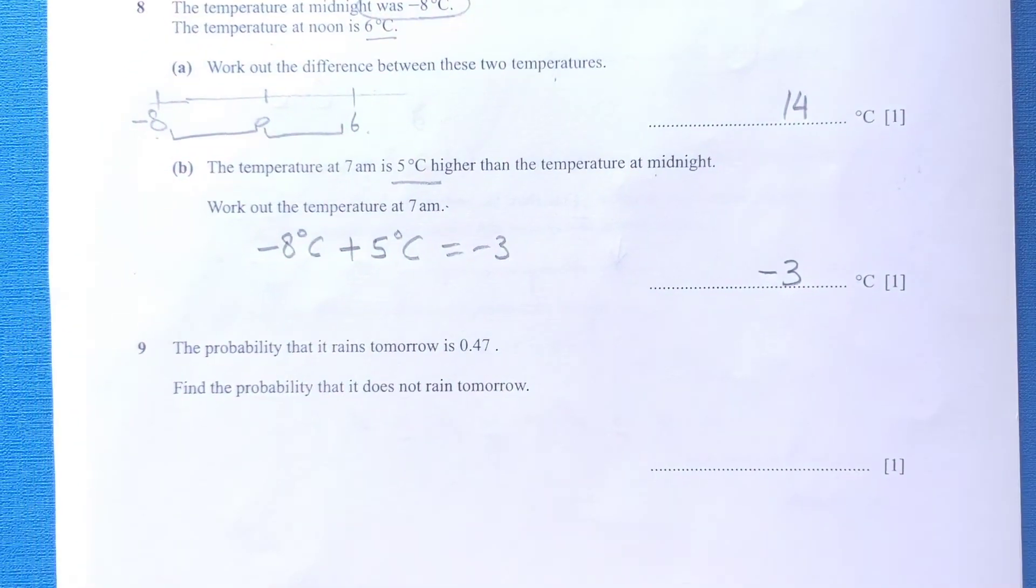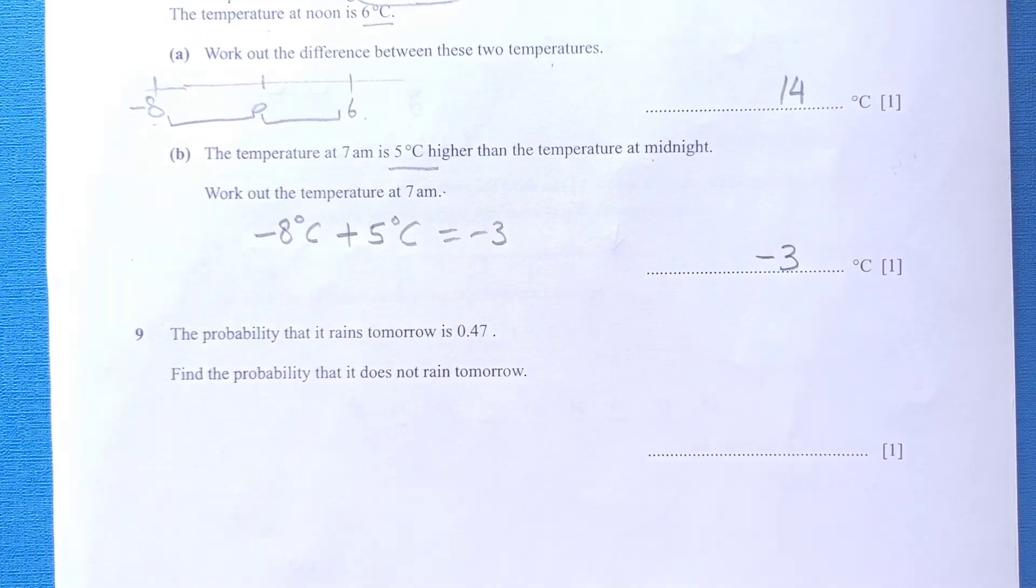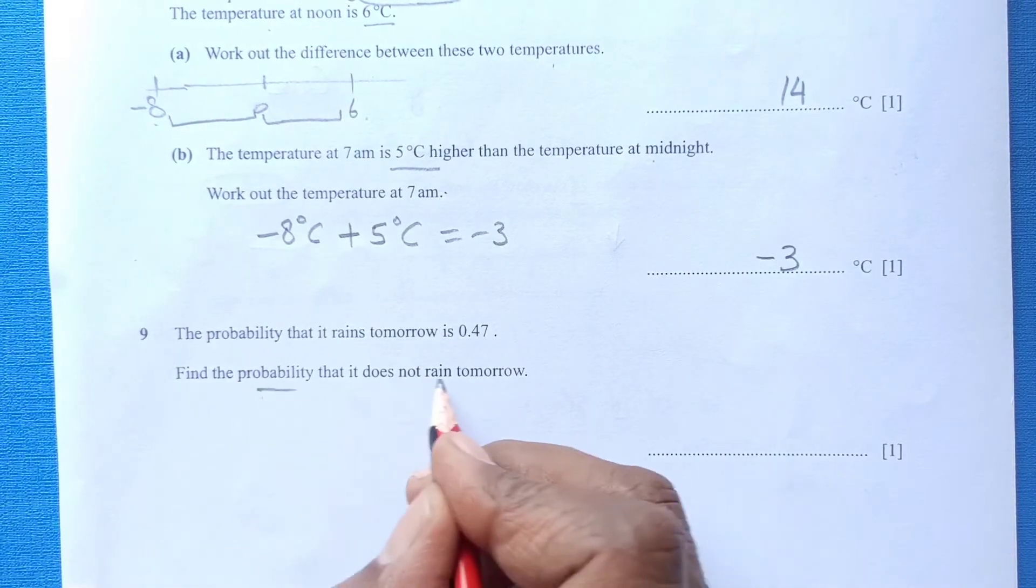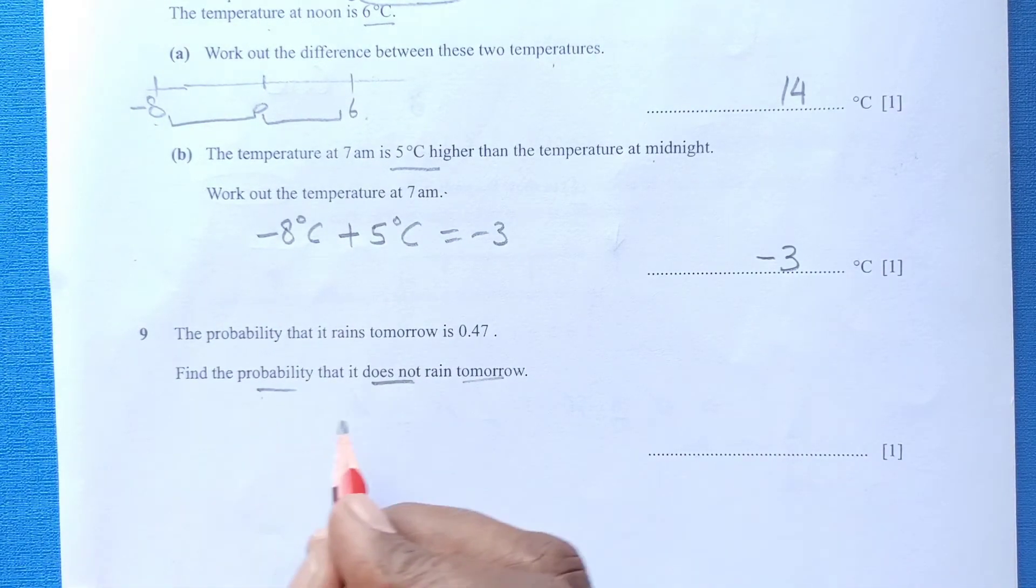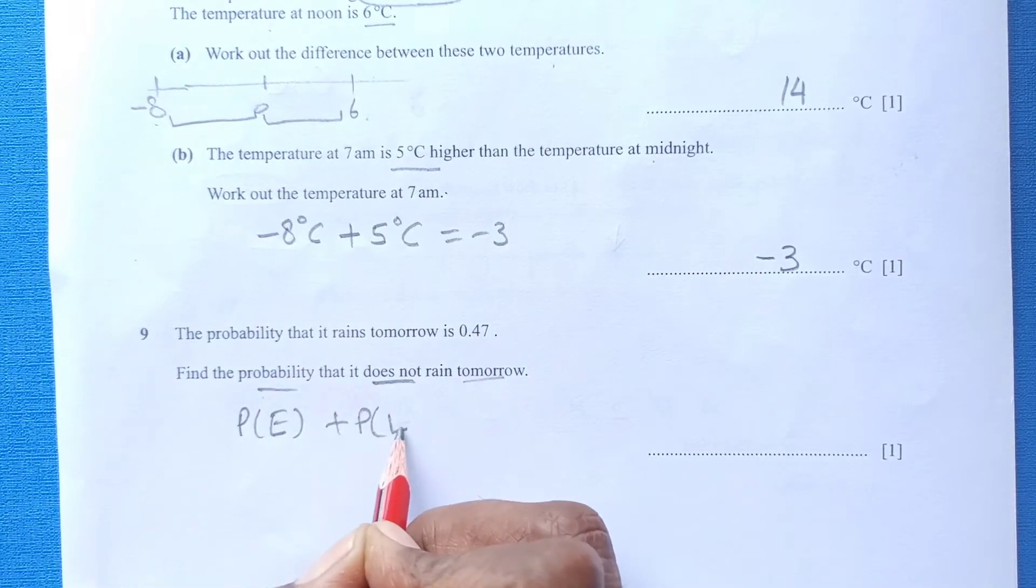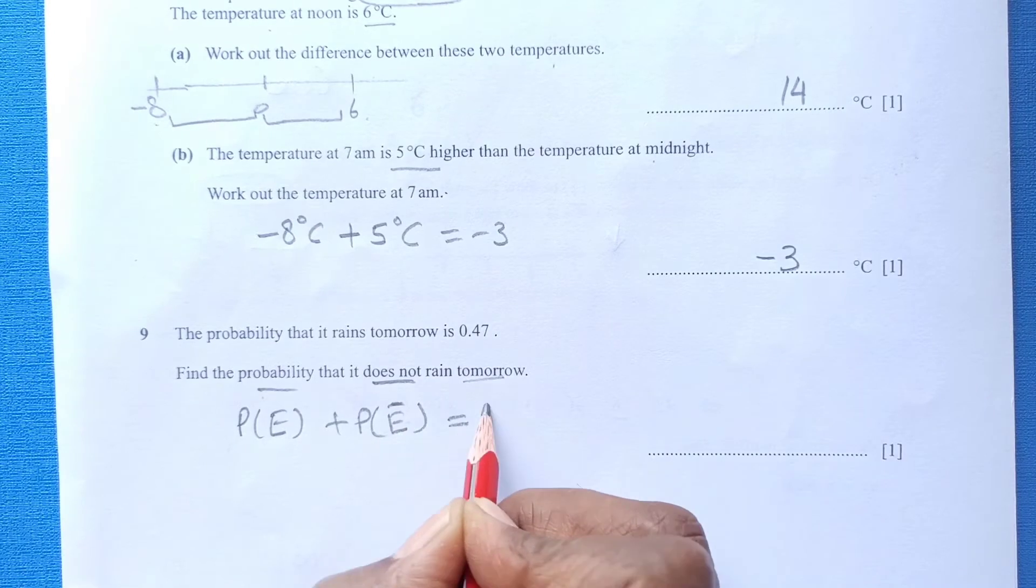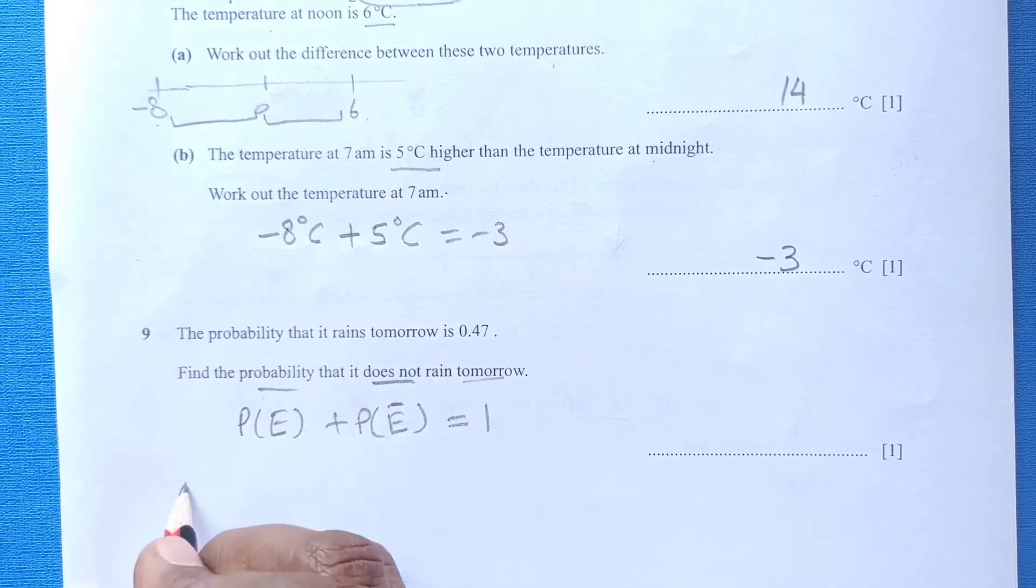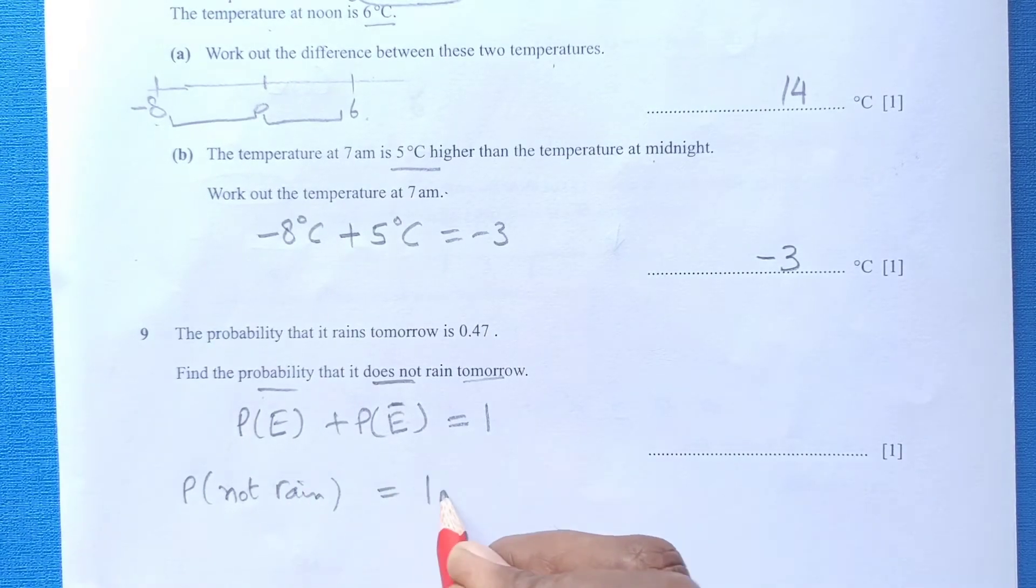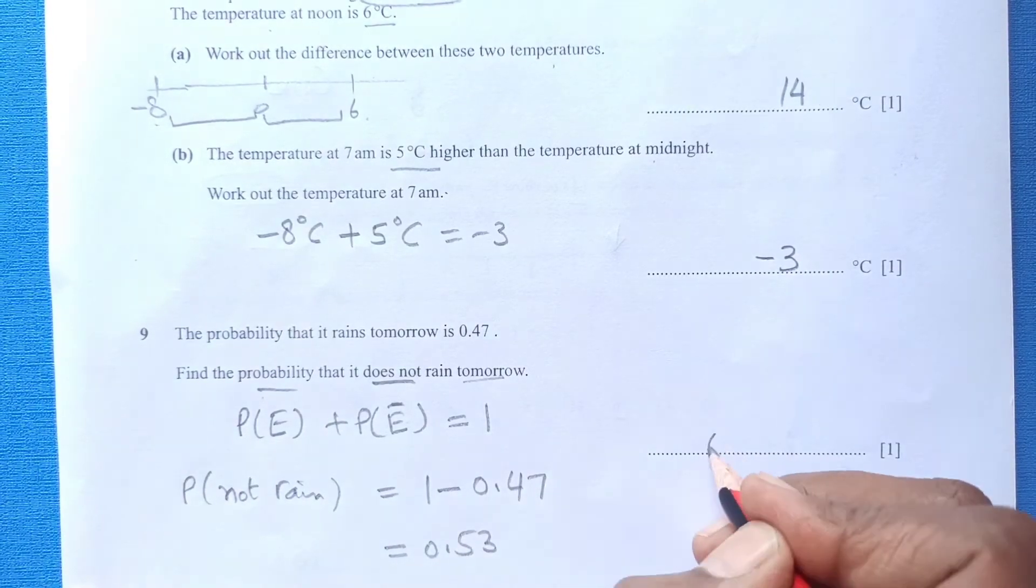Number 9: The probability that it rains is 0.47. Find the probability that it does not rain. Probability of happening an event and probability of not happening an event is always 1. That means probability of not having rain will be 1 minus 0.47. When you subtract, this is 0.53.